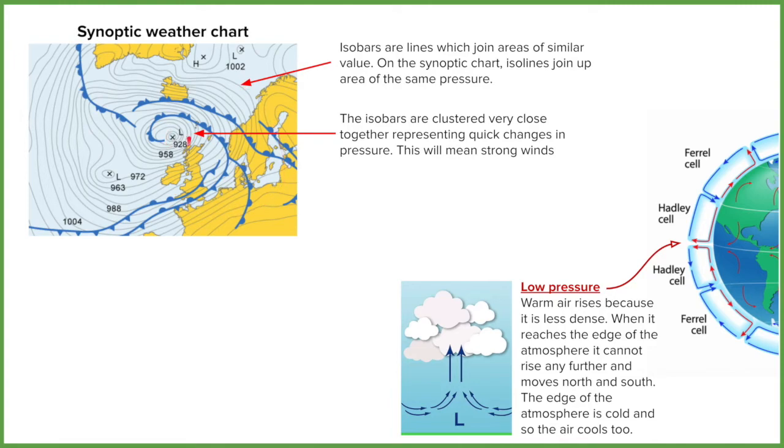We've also got this X and an L and a number. So this is like a spot pressure point. That X is indicating the center of the low pressure system and the 298 is representing 928 millibars of pressure. So anything under a thousand millibars is generally seen as being low pressure. Anything over is seen as high pressure.